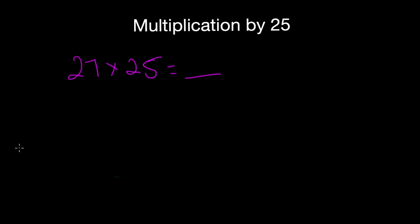The way you would solve this is you would go ahead and divide 27 by 4, and you know that that is 6 with a remainder of 3.